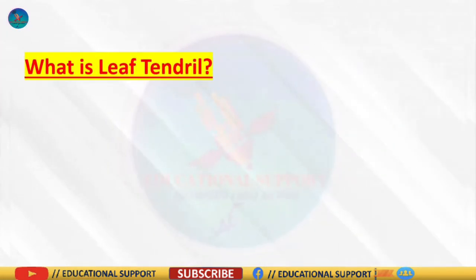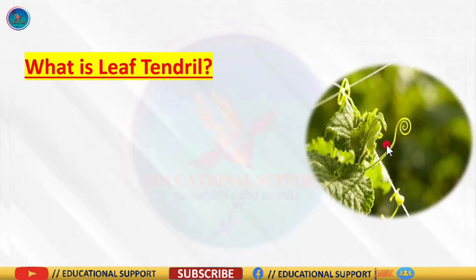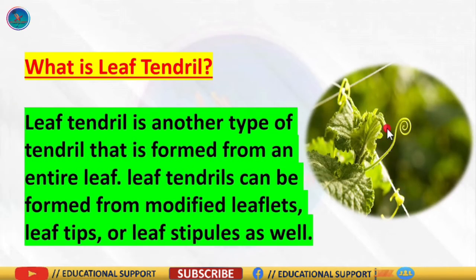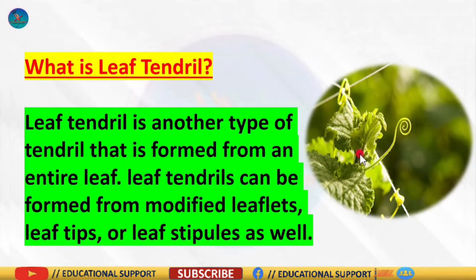Next, what is a leaf tendril? A leaf tendril is another type of tendril that is formed from an entire leaf. Moreover, leaf tendrils can be formed from modified leaflets, leaf tips, or leaf stipules as well. In some plants such as sweet pea, the leaf axis terminates in a tendril in order to facilitate climbing.